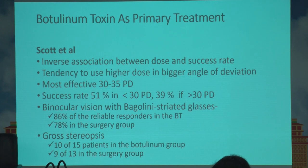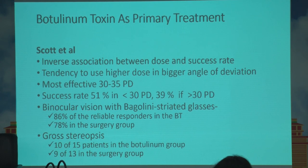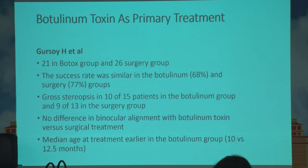Another study shows an inverse association between dose and success rate. Botox was used for cases with larger deviations of 30 to 35 prism diopters, with a success rate of 51% for deviations less than 30 prism diopters and around 40% for deviations more than 30 prism diopters. However, there was good gain in binocular vision tested using the Bagolini striated glasses, and improvement in gross stereopsis in the Botox group compared to the surgical group. Another study found no significant difference in binocularity between the botulinum and surgical groups, though the median age of treatment was earlier in the Botox group.